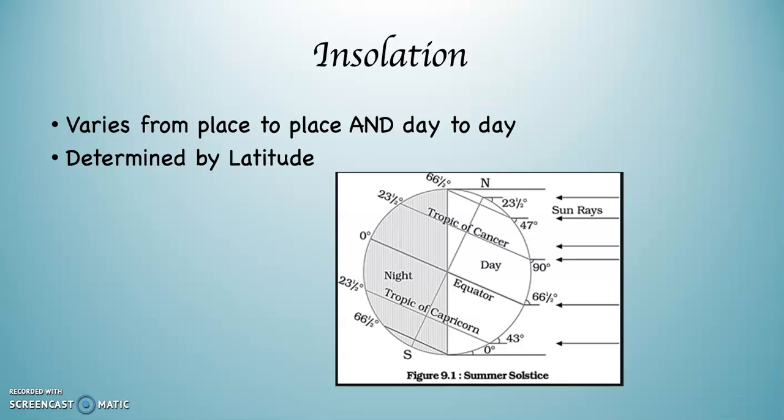Then notice at 23.5 degrees south, the Tropic of Capricorn, the sun is at a 43 degree angle on that day. So that would be maximum solar radiation on that day. And then at 66.5 degrees south, the Antarctic Circle, the sun would be literally right over the lip of the horizon and there would be no solar radiation coming in.